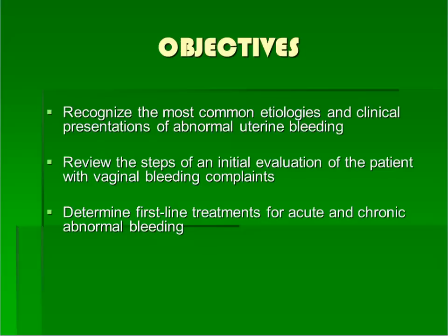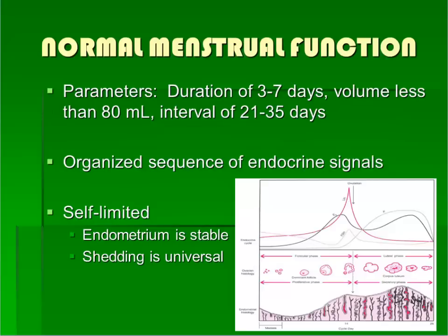The objectives for this presentation on abnormal bleeding are listed here. Abnormal uterine bleeding is contrasted with normal bleeding patterns. The parameters of normal uterine bleeding are listed here.